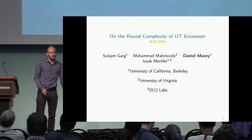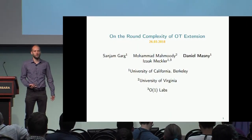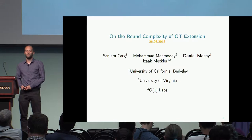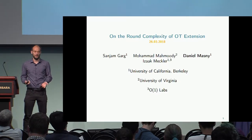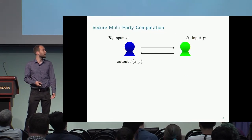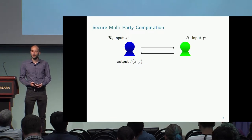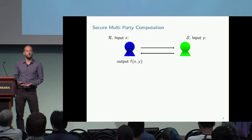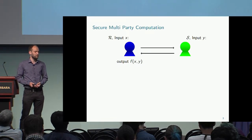Thanks for the introduction. I will talk about the round complexity of OT extension. But before I go into the technical details, I want to talk a little bit about secure multi-party computation, because that's the reason why oblivious transfer is so important.